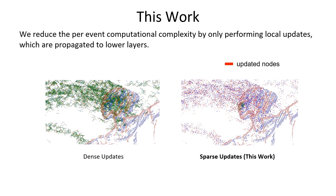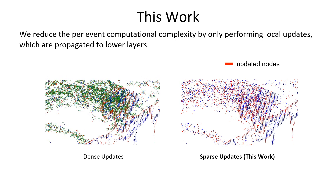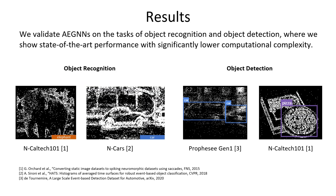Updating the whole event graph every time a new event is perceived would be very computationally demanding. We decrease the per-event computational complexity by only performing local updates which are propagated to lower layers, thereby leading to massive savings in computational complexity. We validate AGNN on the tasks of object recognition and object detection, where we show state-of-the-art performance with significantly lower computational complexity.